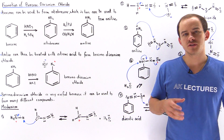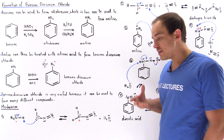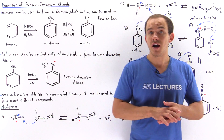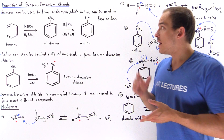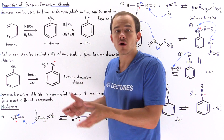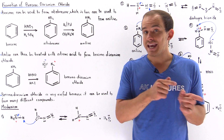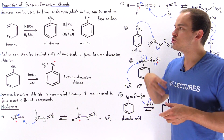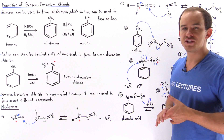In this lecture, we're going to focus on the reaction mechanism of the formation of benzene diazonium chloride, a very important molecule in organic chemistry. This molecule, benzene diazonium chloride, can be used to form many other important compounds, as we'll discuss in the next lecture.